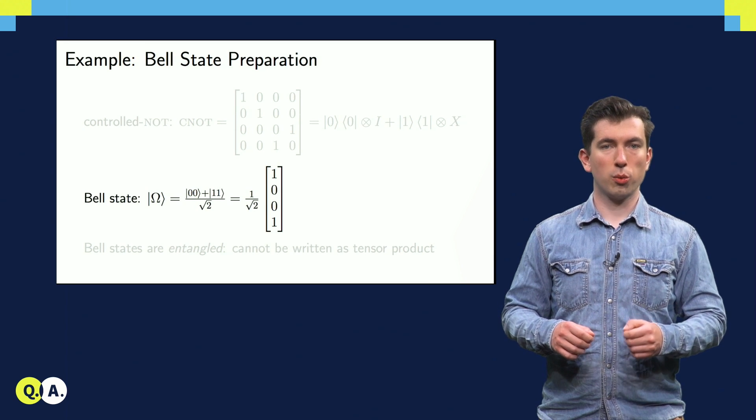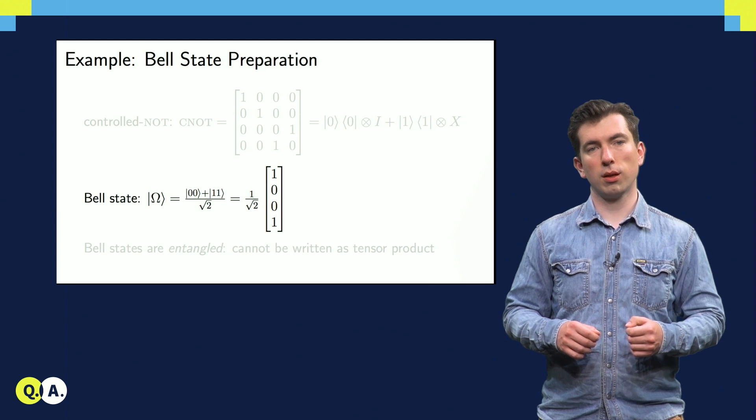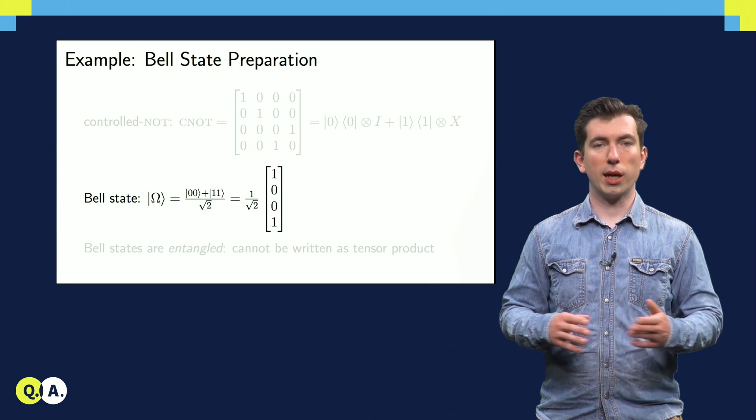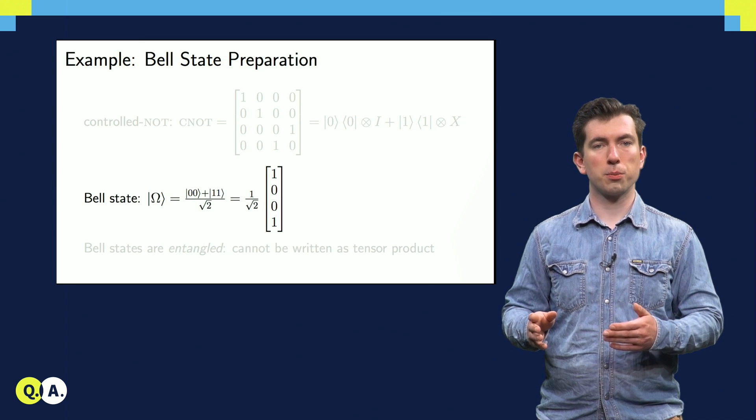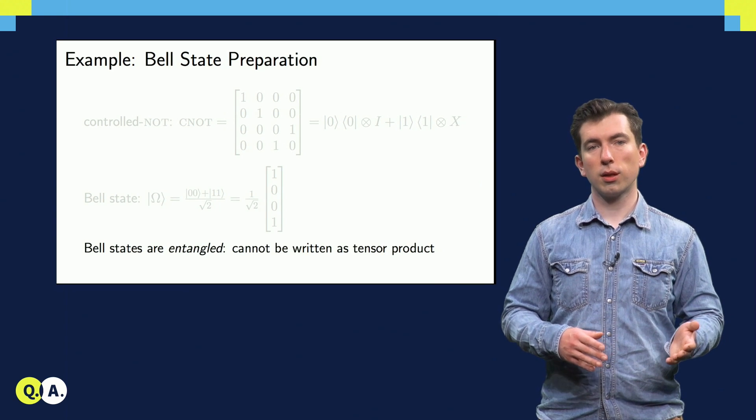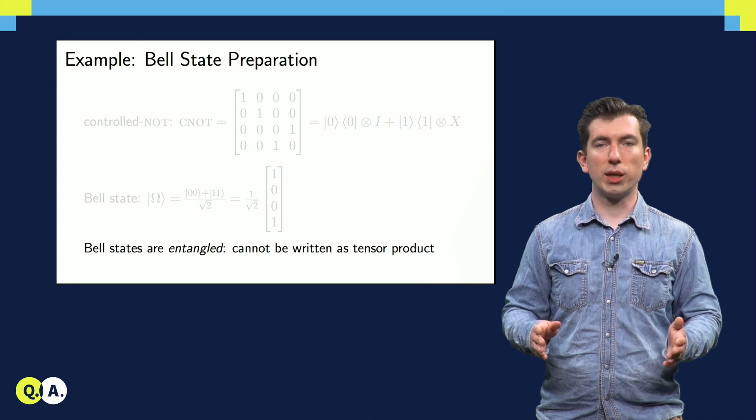Here we see the Bell state, which we're going to prepare using the CNOT. We can write it out using either ket notation or as a column vector. Note that the Bell state, just like the CNOT, cannot be written as a tensor product.